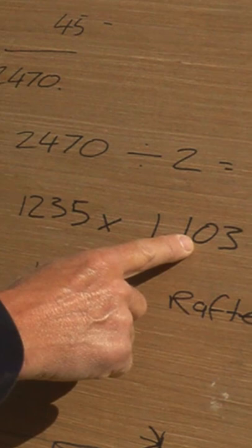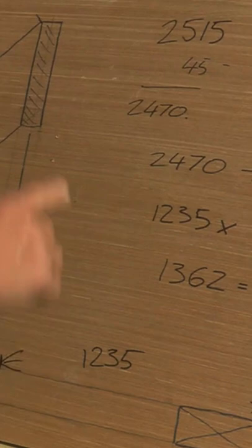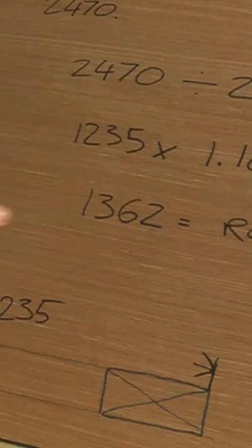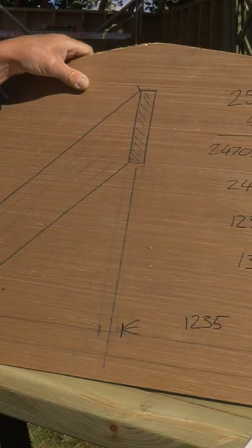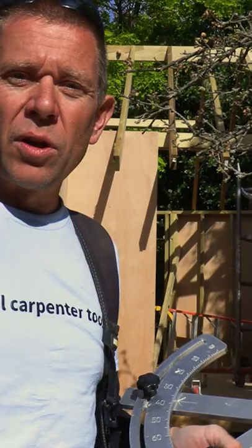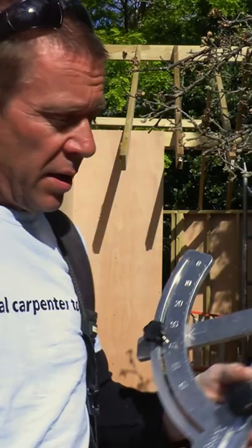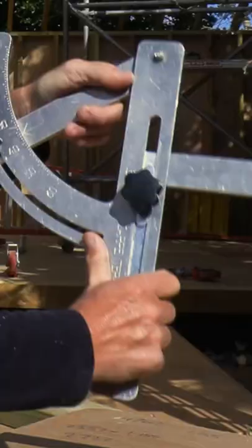That is the length of our rafter — so from here to here it's 1362mm. You have to know the angle of your roof. What I quite often do on an existing property is do a level line on the existing rafter, then once you transfer that line, put the square on it and that will give you the pitch of the roof.